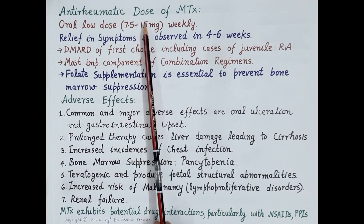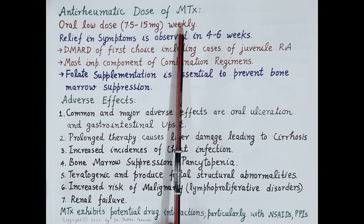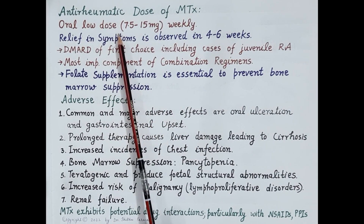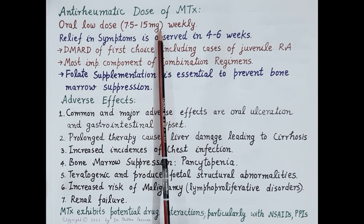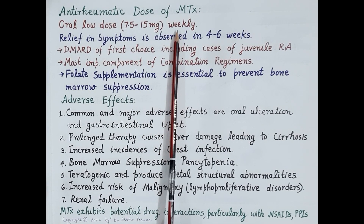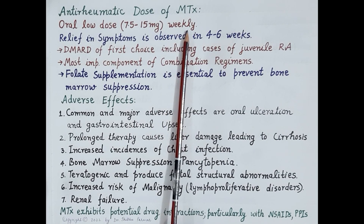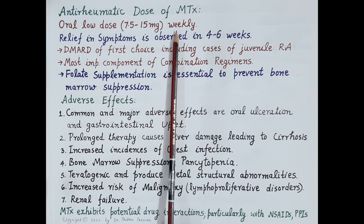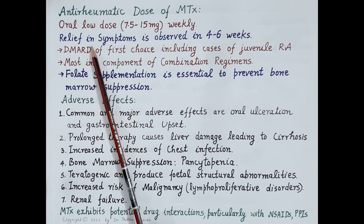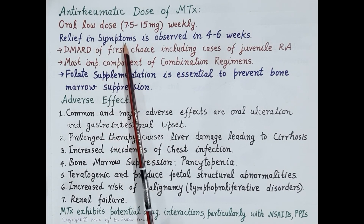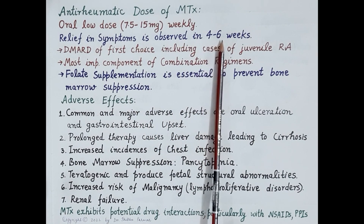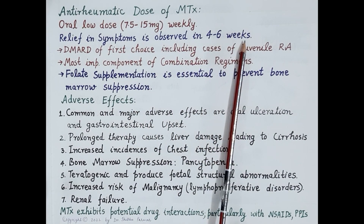The anti-rheumatic dose of methotrexate is an oral low dose ranging from 7.5 to 15 milligrams weekly, which is found effective in rheumatoid arthritis. This weekly regimen has high acceptability in patients, while higher doses are required in the treatment of cancer. Onset of relief from rheumatoid arthritis symptoms is observed within 4 to 6 weeks after administration of the first dose.